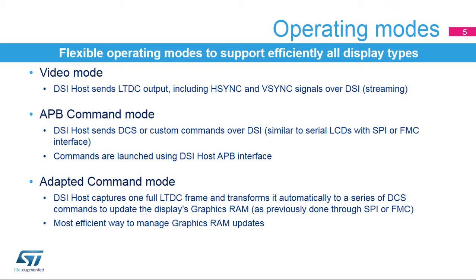APB command mode sends commands over the high-speed link for configuration, as is done using a legacy serial interface such as SPI or FMC. The commands are launched using the DSI-Host APB interface. Adapted command mode is the best way to interface with a display having its own internal graphics RAM. The DSI-Host captures only one full frame coming from the LTDC and transforms it into a series of write commands to update the display graphics RAM.